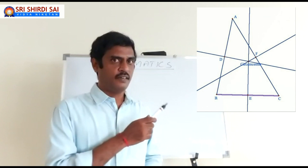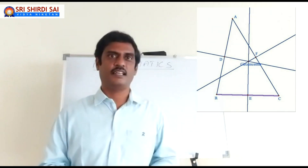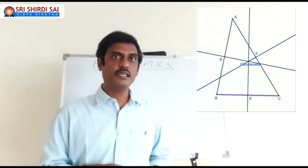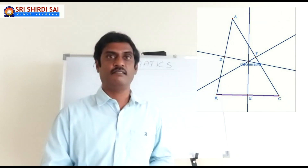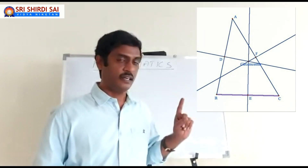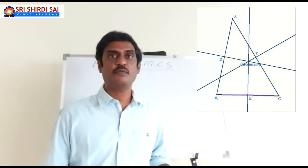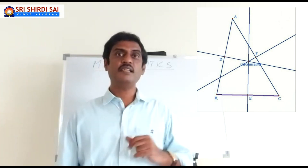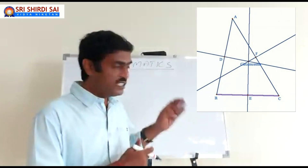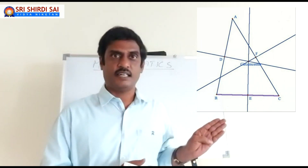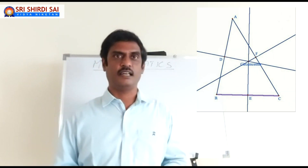Where is the circumcenter? For this triangle, the circumcenter lies inside the triangle. But it doesn't mean that the circumcenter always lies inside the triangle for any type of triangle. The location of the circumcenter may change from triangle to triangle — it depends on the type of triangle. This is an acute angle triangle, and for an acute angle triangle, the circumcenter lies inside the triangle.